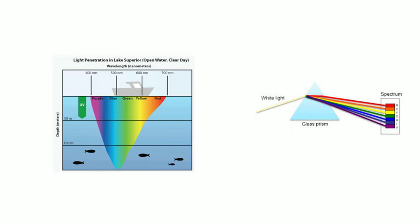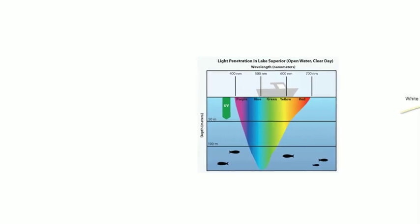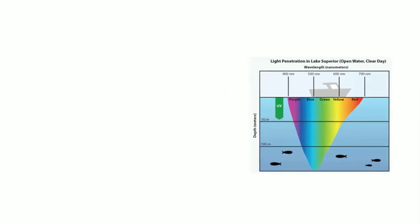And above 200 meters, the violet and indigo colors are absorbed. Due to the successive absorption of colors, the ocean gradually becomes darker. Below a depth of 1 kilometer, there is complete darkness.